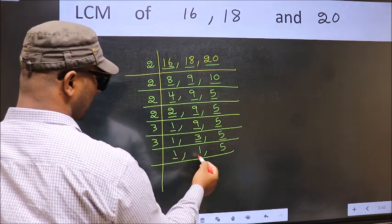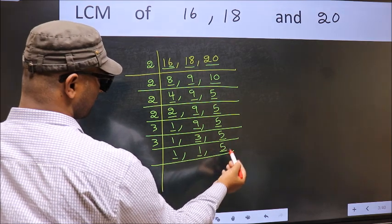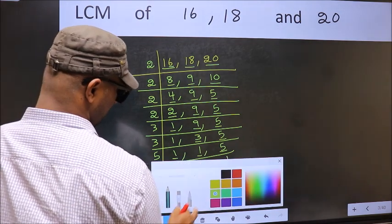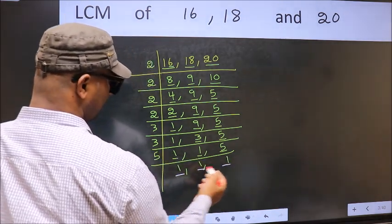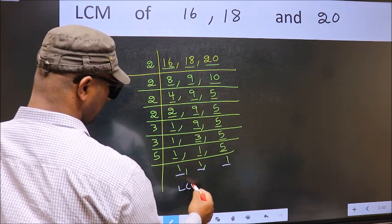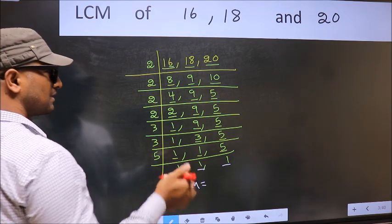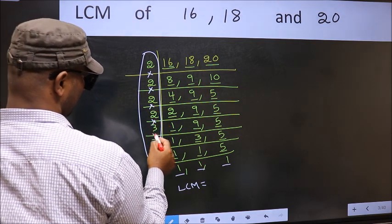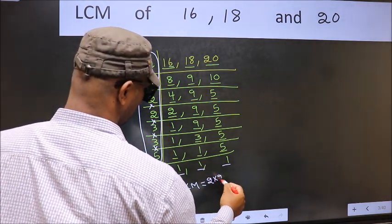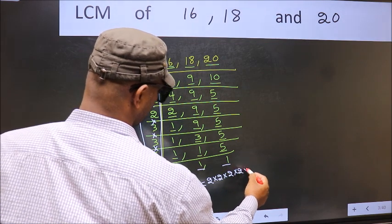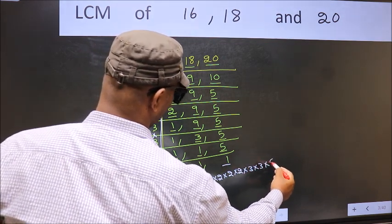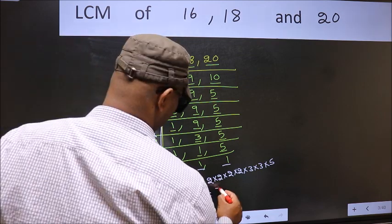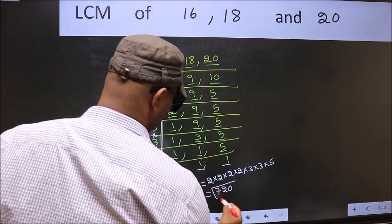Now we got 1 here and here. So focus on the other number 5. 5 is a prime number, so 5 divided by 5 gives 1. We got 1 in all 3 places. So our LCM is the product of these numbers: 2 × 2 × 2 × 2 × 2 × 3 × 3 × 5. When we multiply these numbers, we get 720 as our LCM.